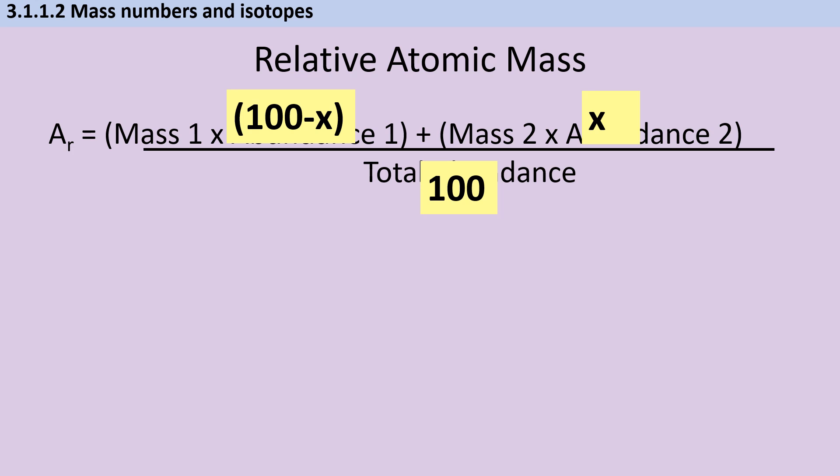Incidentally, your life will always be easier if you make the heaviest isotope the one with an abundance of X. If you don't do this, the maths will still math, but you will have to deal with negative numbers at the end, which is just a little bit of a pain.